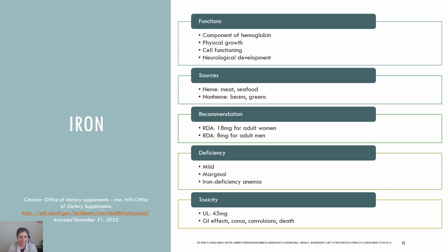The RDA for iron is 18 milligrams for adult women and 8 milligrams for adult men. Iron deficiency can be described in three stages: mild, marginal, and iron deficiency anemia. With a mild deficiency, serum ferritin concentrations and levels of iron in bone marrow decrease. With a marginal deficiency, iron storages are depleted, transferrin saturation decreases, and hemoglobin is within range. The final stage is iron deficiency anemia, when hemoglobin levels, hematocrit, and MCV are low, and red blood cells are small with low hemoglobin concentrations. Besides weakness and fatigue, those with iron deficiency anemia may also have impaired cognitive function, impaired body temperature regulation, difficulty concentrating, and GI issues.